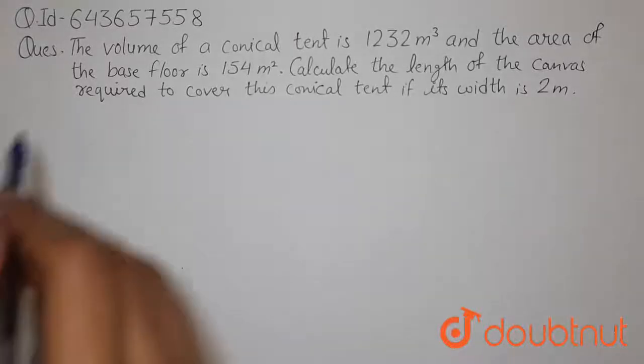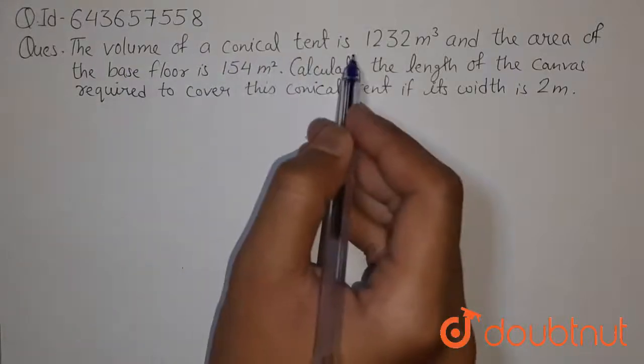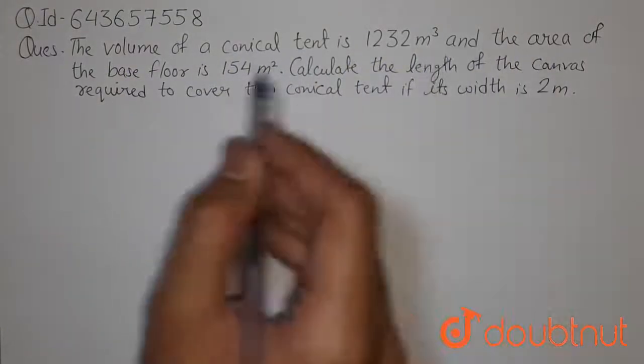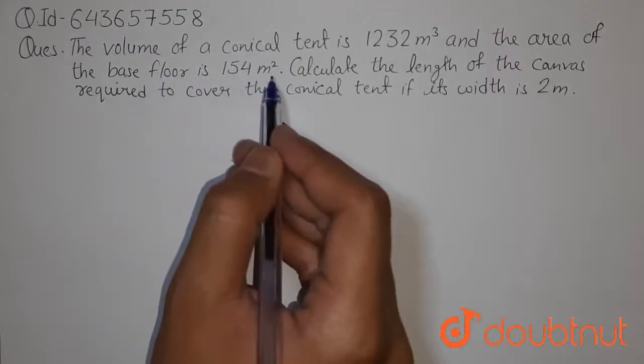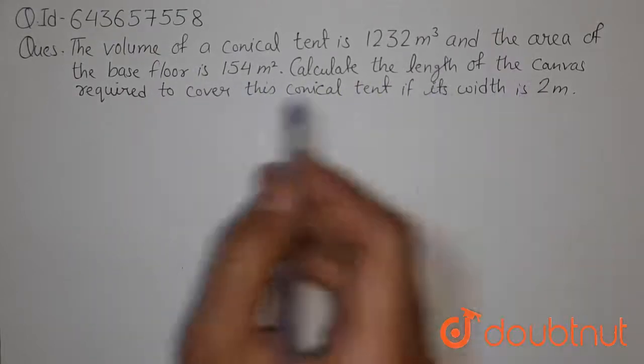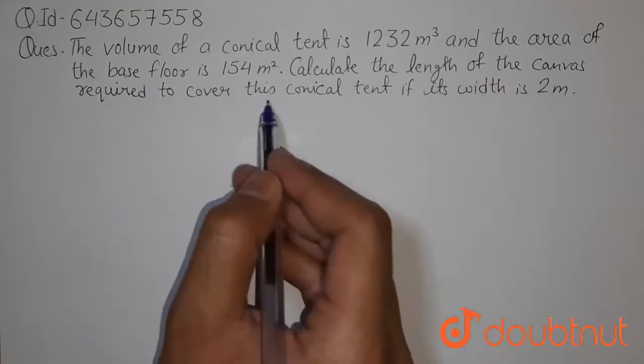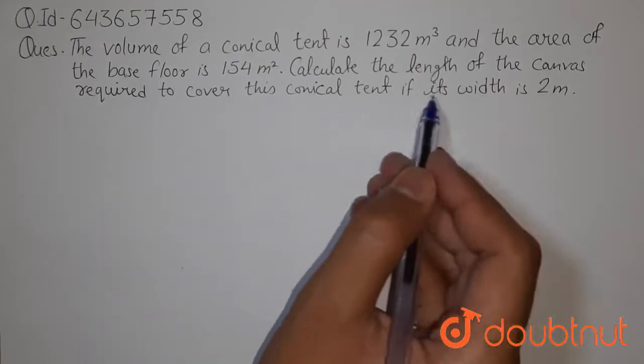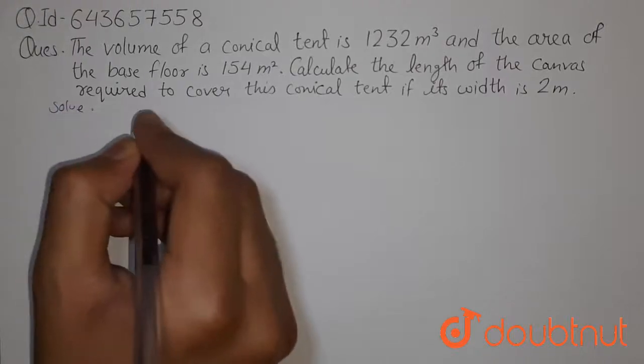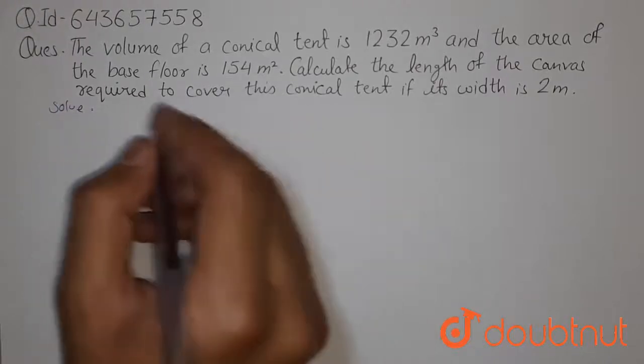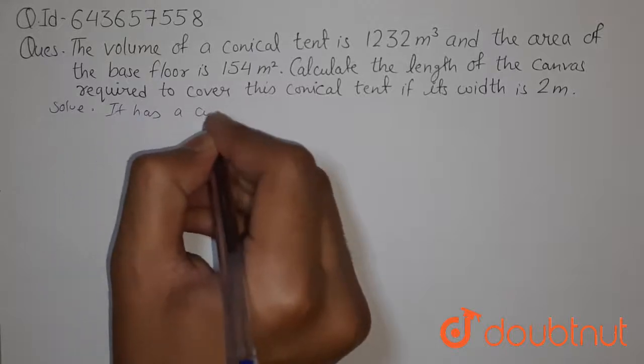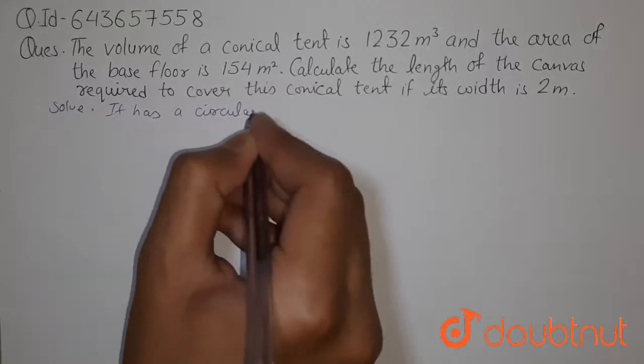The question is: the volume of a conical tent is 1232 meter cube and the area of the base floor is 154 meter square. Calculate the length of the canvas required to cover this conical tent if its width is 2 meter. Solving this question, first we know that the conical tent has a circular base.